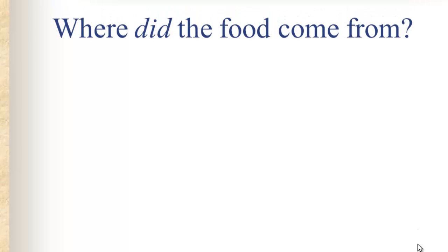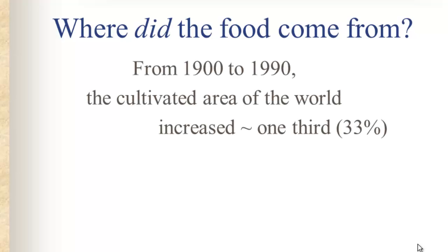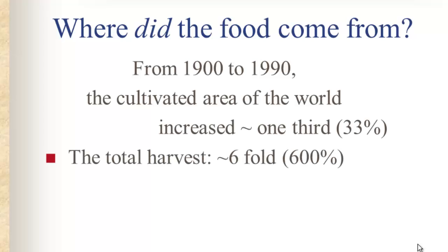A question that arises is: where did the food come from? This is even more interesting when we observe that during the 20th century the cultivated area of the world increased only about one-third, but the harvest of food during that century increased about six times — 600 percent. So how did that happen?